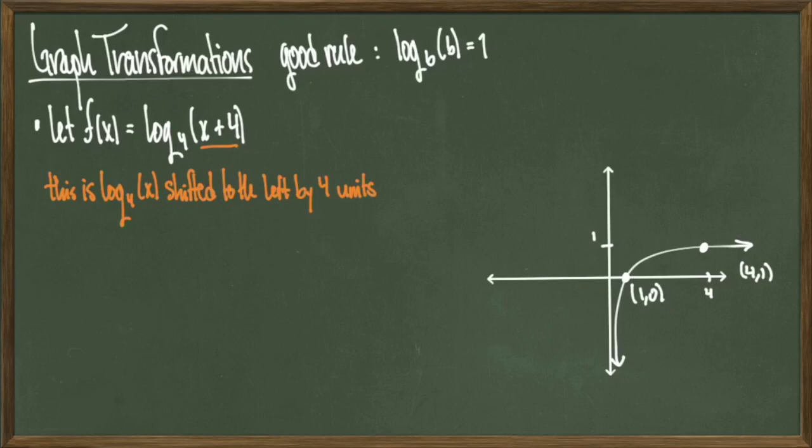Log base 4 of x will cross the x-axis at the point (1, 0), and it'll also contain the point (4, 1), because log base 4 of 4 equals 1 per the rule on the top of the screen here. Now looking at this leftward shift by 4 units, I can take the graph I just drew and basically move it to the left by 4 units.